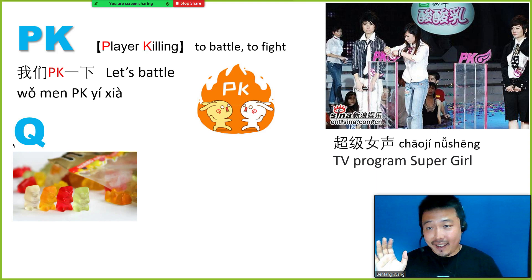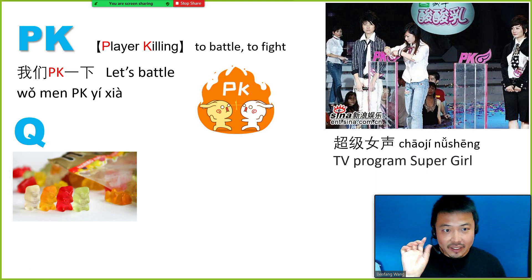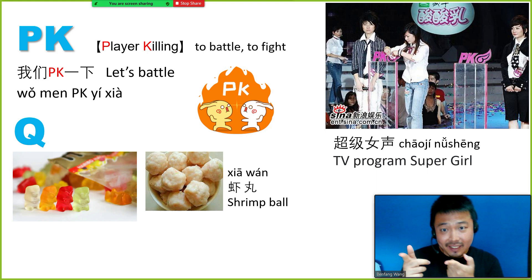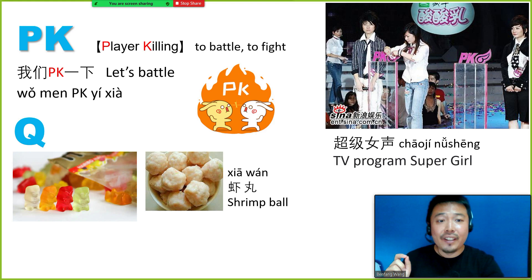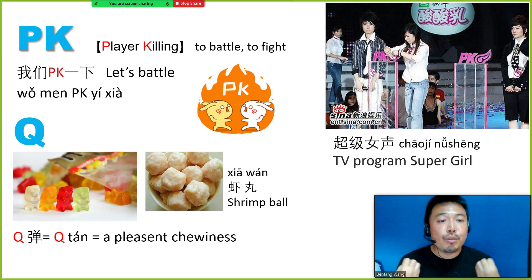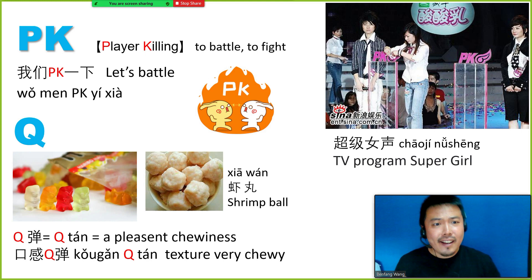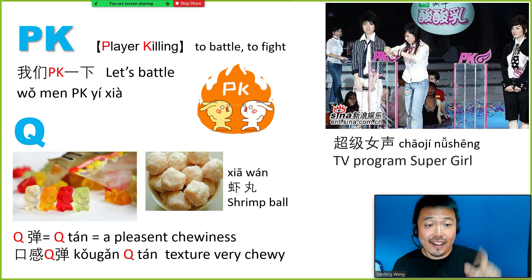The next letter is Q. Think about the texture of chewy candy, or 虾丸 (shrimp balls) — the texture is very chewy. Therefore, Q or Q弹 means a pleasant chewiness. For example, sometimes we say 口感Q弹, which means the texture is very chewy and bouncy.